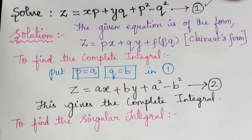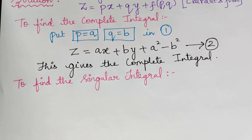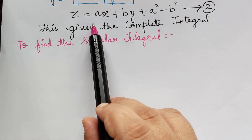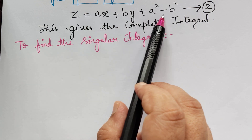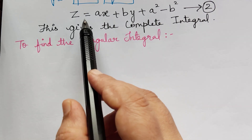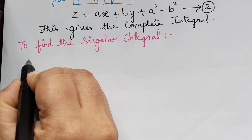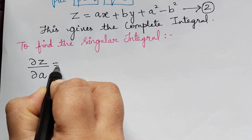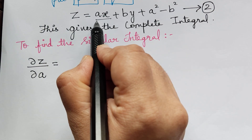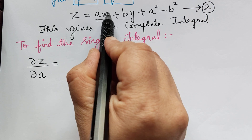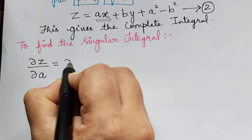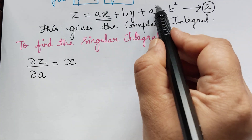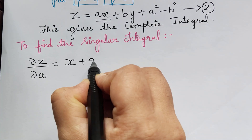The next step is to find the singular integral, for which we have to differentiate equation 2 partially with respect to a and partially with respect to b. Now differentiating equation 2 partially with respect to a, we get ∂z/∂a = x + 2a, since differentiating ax gives x and differentiating a² gives 2a.